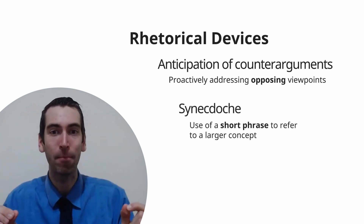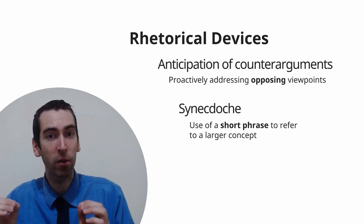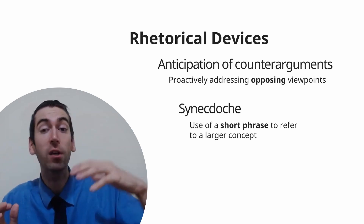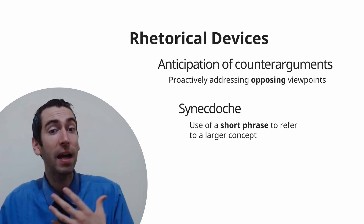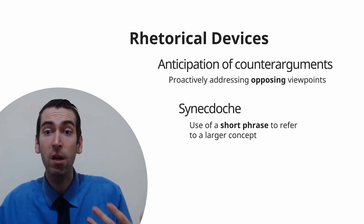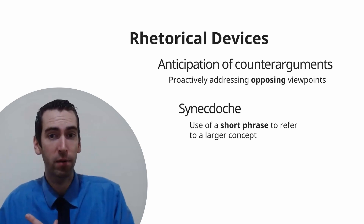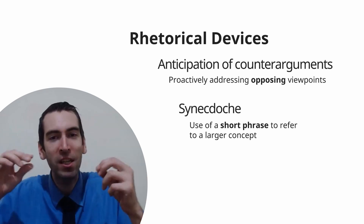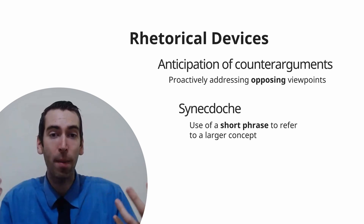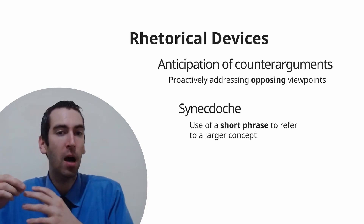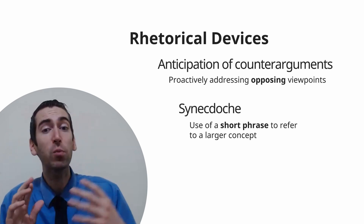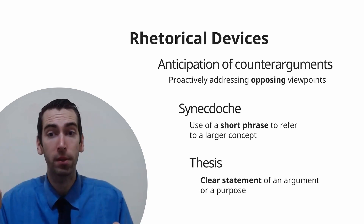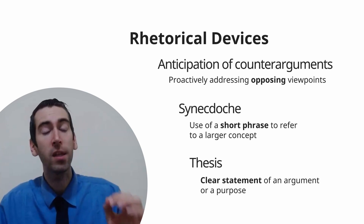Synecdoche is the most important rhetorical device to master for the CARS section. This is where an author will use a short phrase to refer to a larger concept — for example, 'boots on the ground' referring to soldiers. You might see within a CARS passage something like 'the wave of a hand' or 'the wink of an eye,' and you need to understand what that signifies in context. The last rhetorical device to consider is thesis: a clear statement of an author's argument or purpose. Usually in a CARS passage, the thesis needs to be inferred.